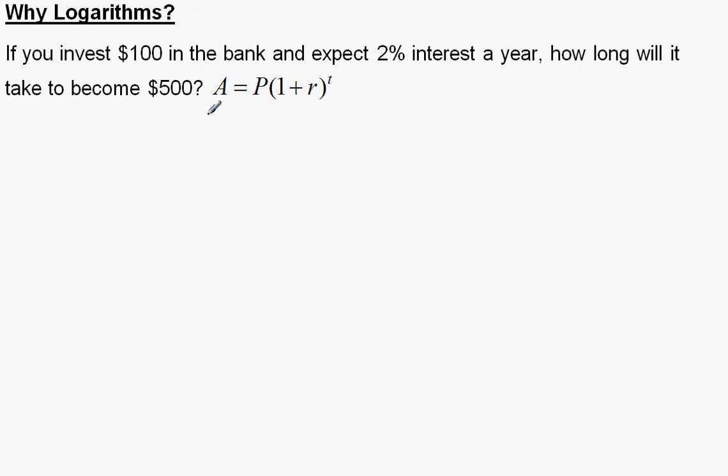So what I do is I plug my values in. My A, my final amount, is $500, equals my initial value, which is $100. P stands for your initial value. And then 1 plus my rate is 2%, and 2% is 0.02. And the power is t.